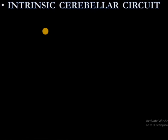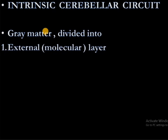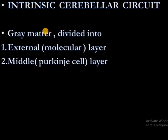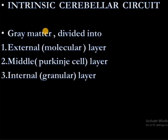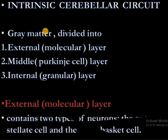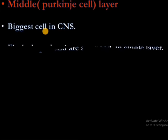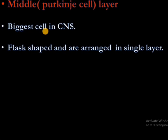The Intrinsic Cerebellar Circuits. Gray matter is divided into external molecular layer, middle Purkinje cells layer, and internal granular layers. External molecular layer contains two types of neurons: outer stellate cells and inner basket cells. The middle Purkinje cells layer contains the biggest cell in the CNS, is flask-shaped and arranged in a single layer.